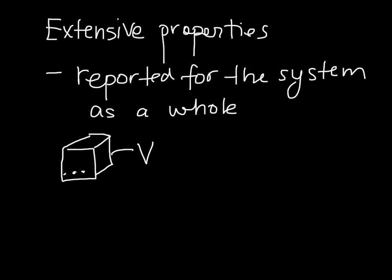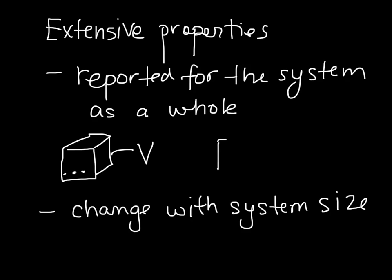Another property of extensive properties is that they change with system size. Volume is a perfect example to look at there. If we make our system twice as big as it was before, now the volume of this system is 2V.